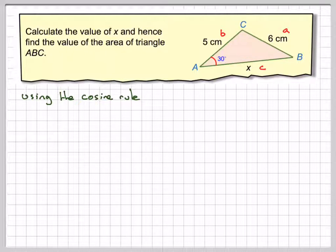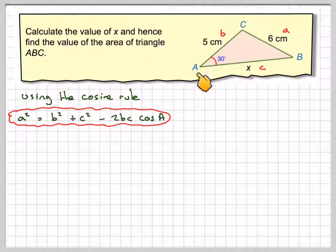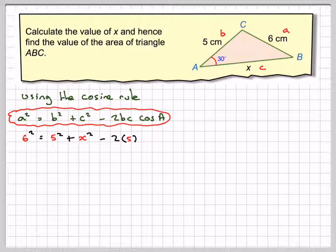Using the cosine rule, I'm using a squared is equal to b squared plus c squared minus 2bc cos A, because that's the one I've got. So a is going to be 6, so 6 squared plus b squared, which is 5 squared, plus c squared, which is x squared, minus 2 times 5 times c, which is x, times the cos of 30.